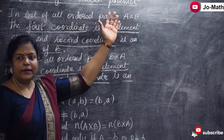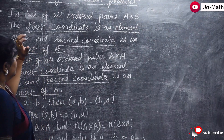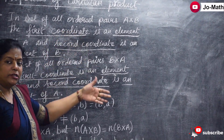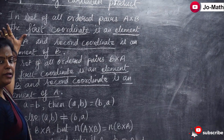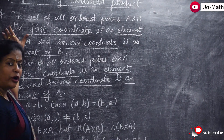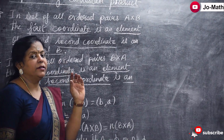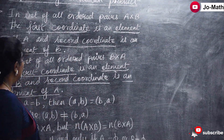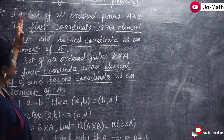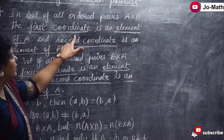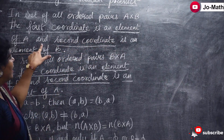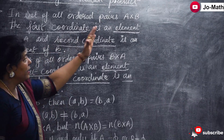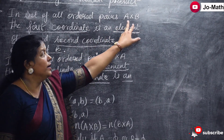Now let us see the properties of Cartesian product. In the last class we saw what is the definition of Cartesian product. Now we are going to see the properties. A cross B is the Cartesian product of two non-empty sets A and B. It is the set of all ordered pairs (a, b) where a belongs to A and b belongs to B. This is what we call A cross B.